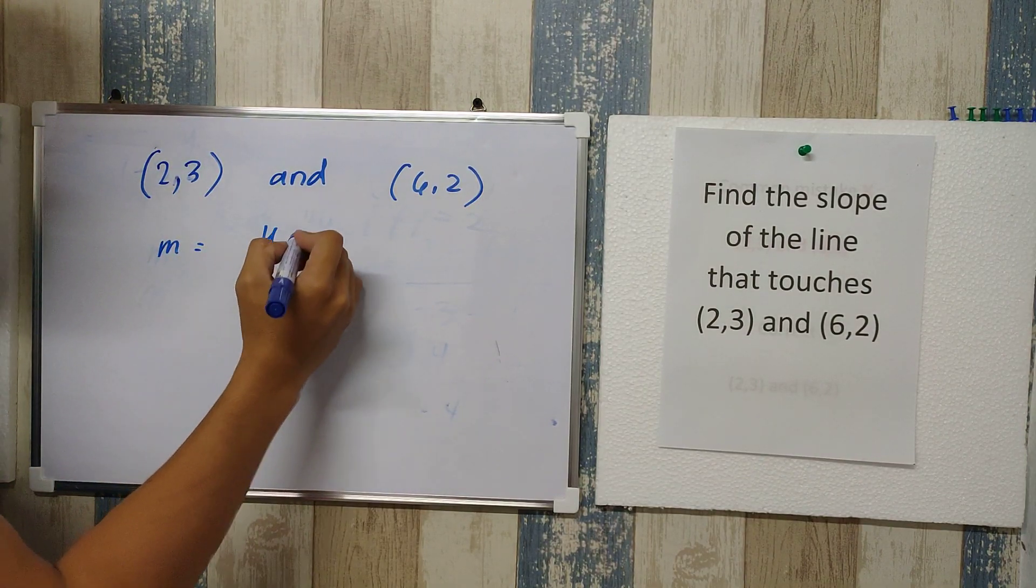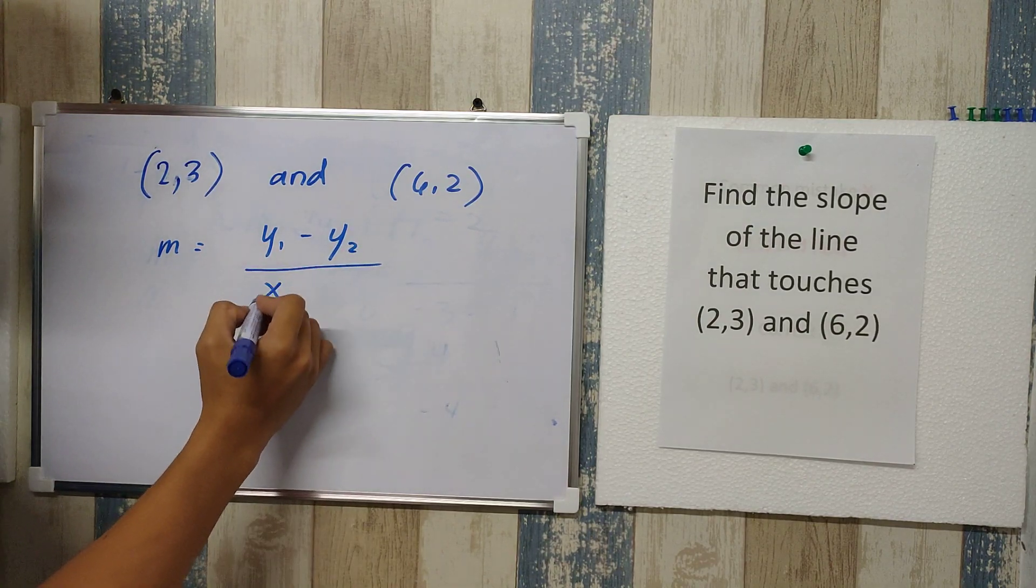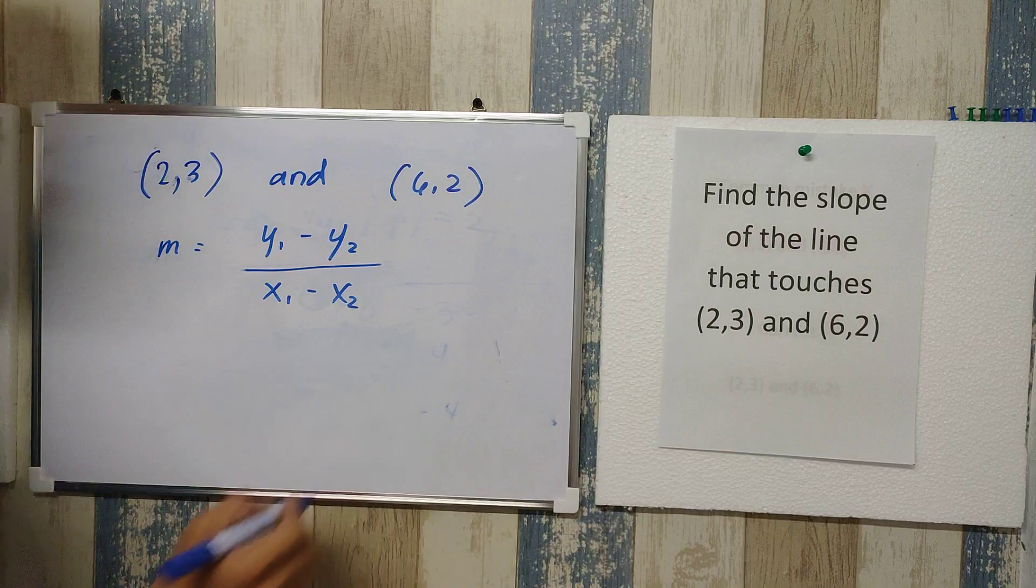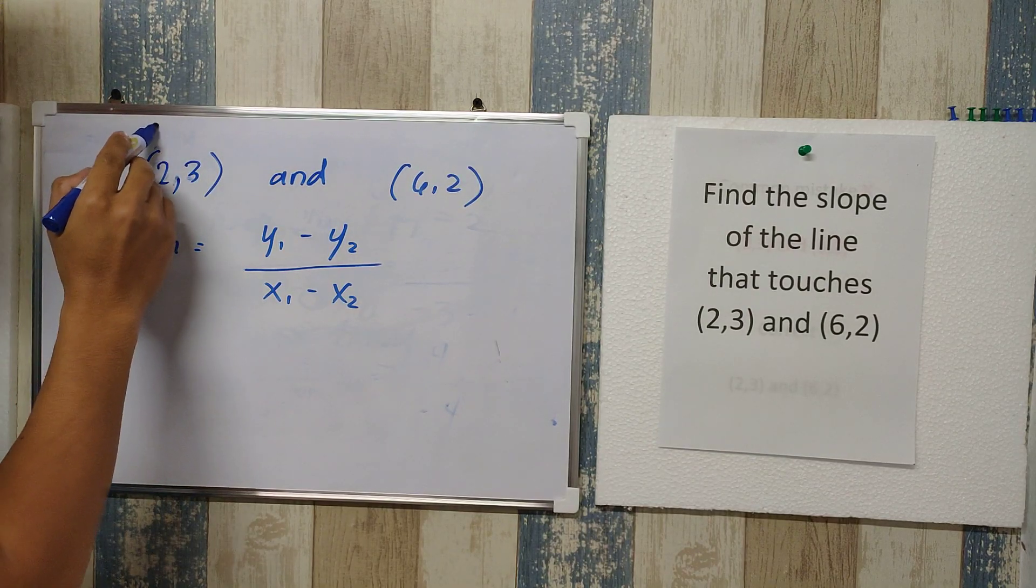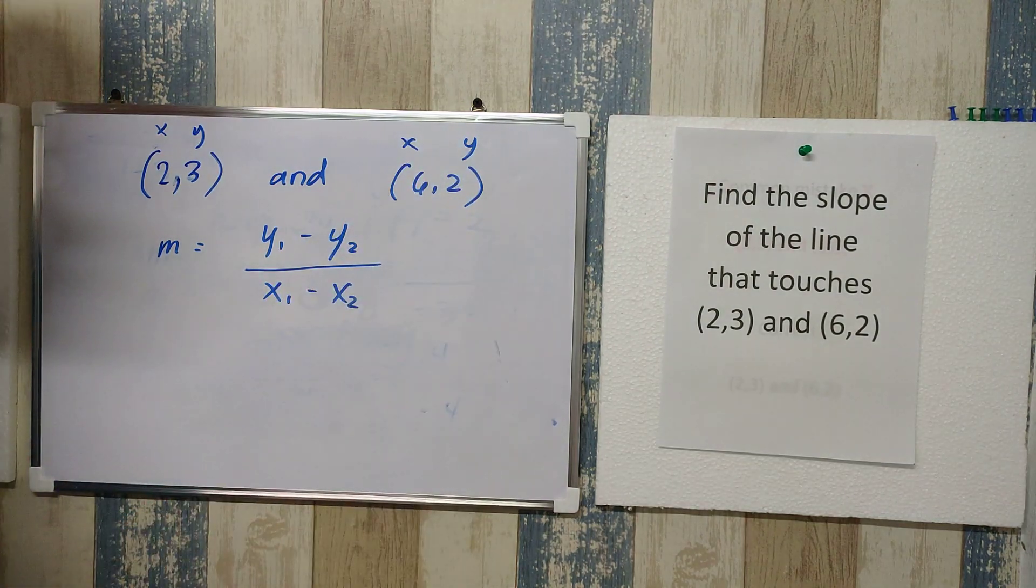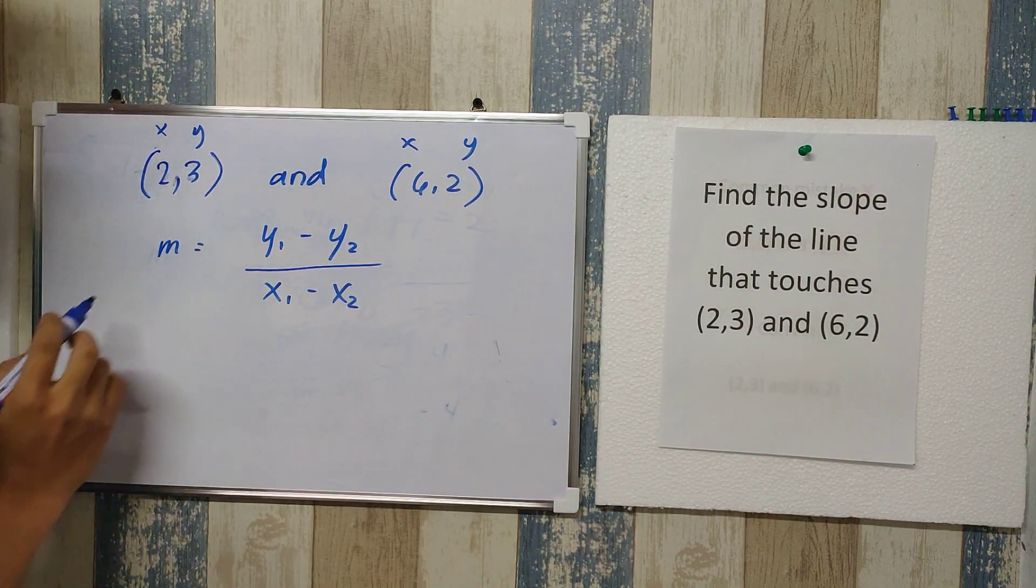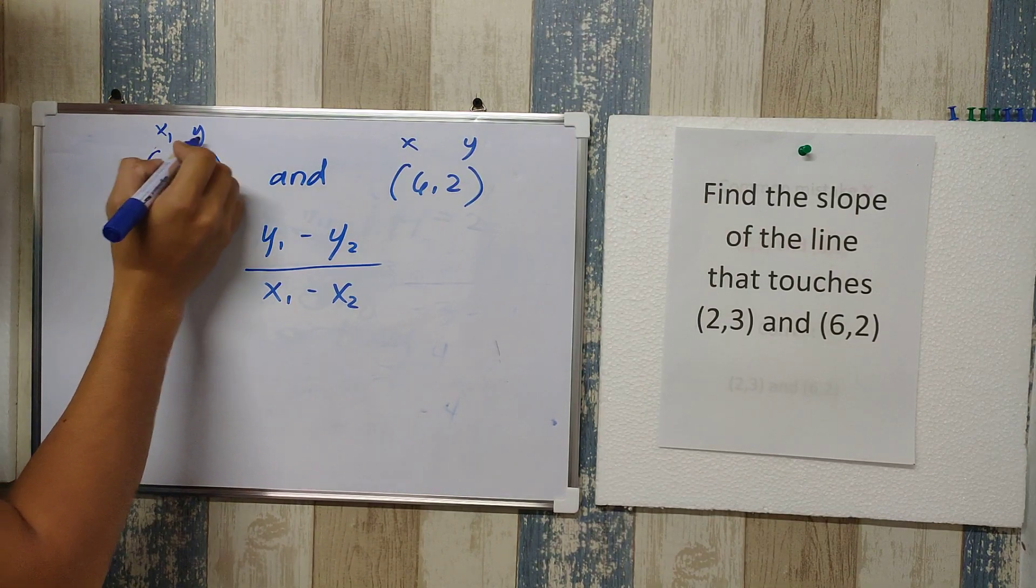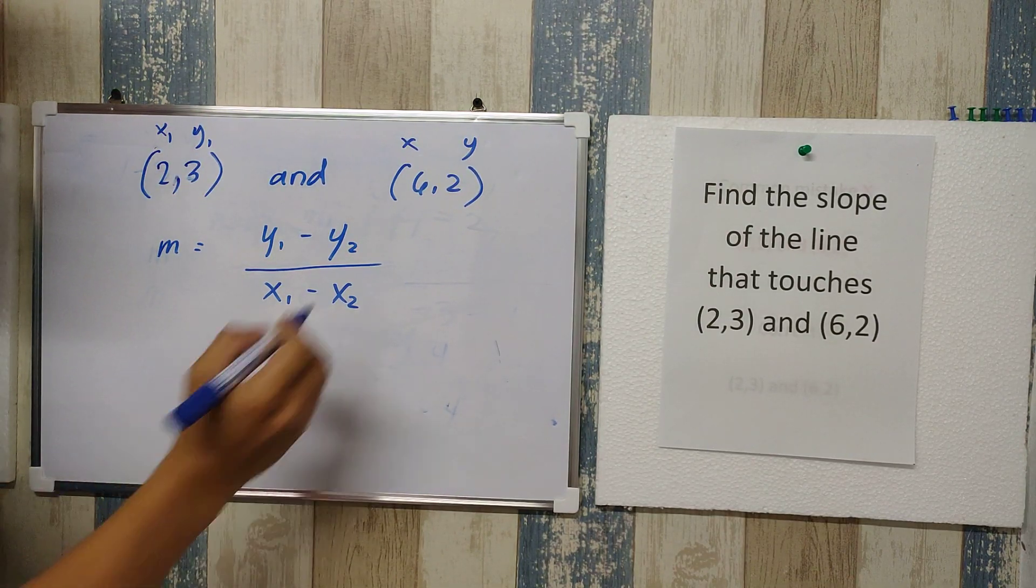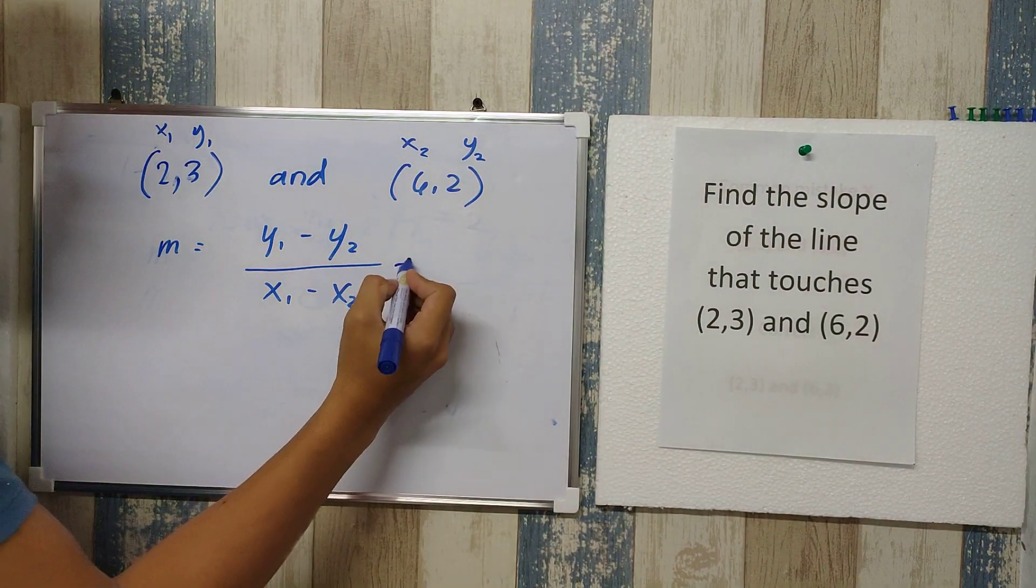First things first, copy the information that you have. In our case, we have 2, 3 and 6, 2. Assign your variables. Again, m is equal to y sub 1 minus y sub 2 over x sub 1 minus x sub 2. Let's make this one x and y, x and y. I want this to be the first point, so I'll put sub 1 and sub 2.